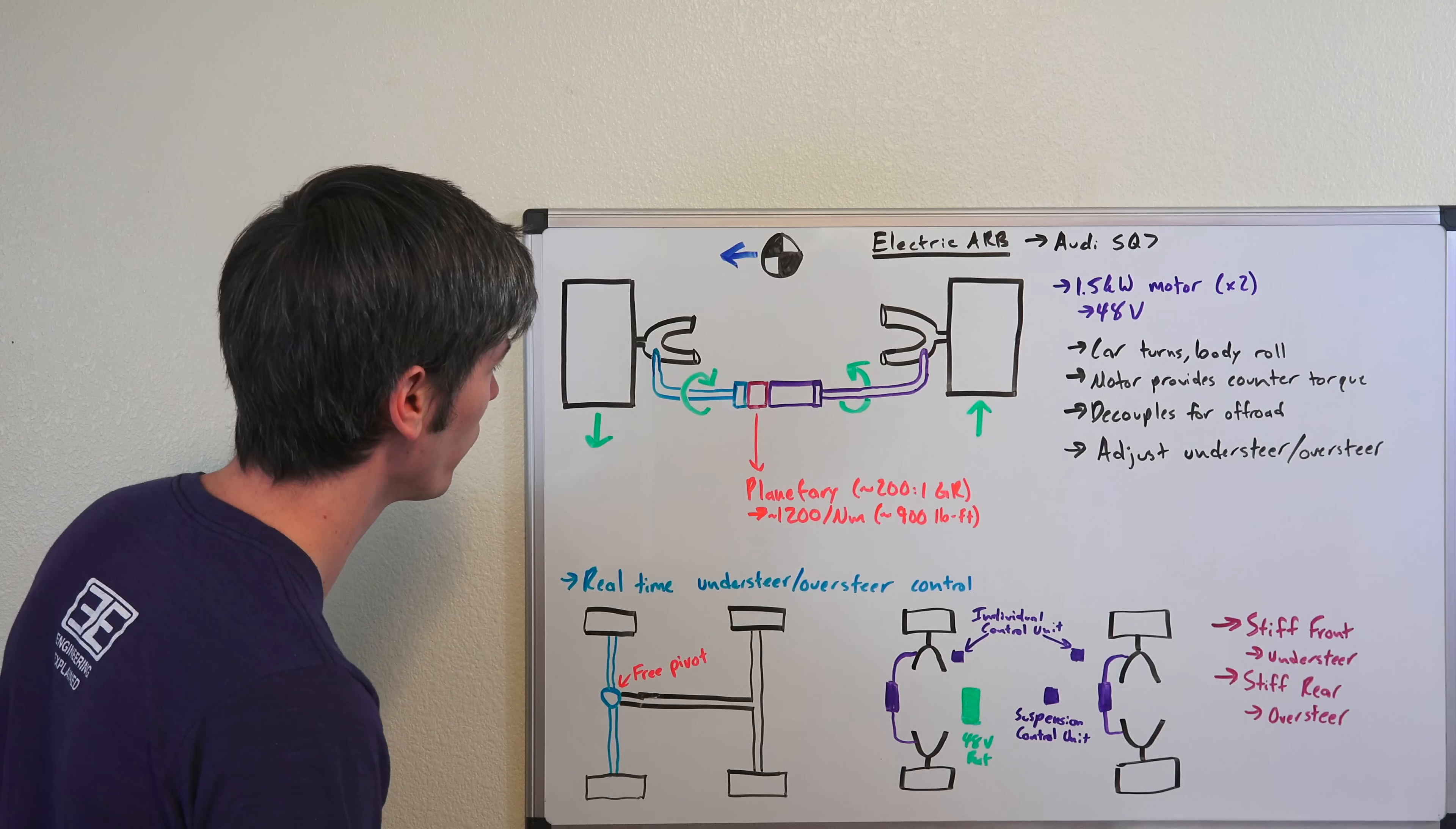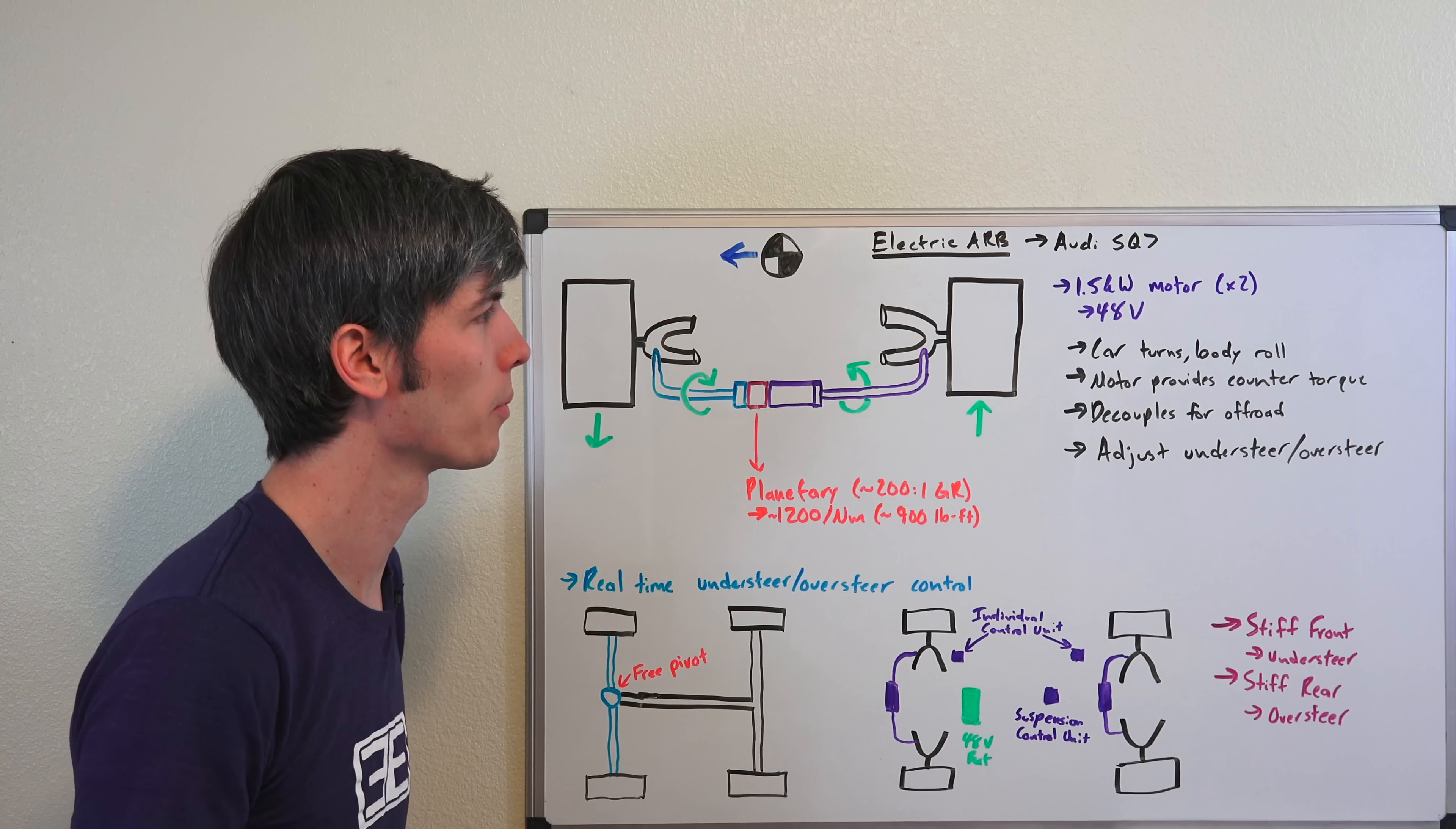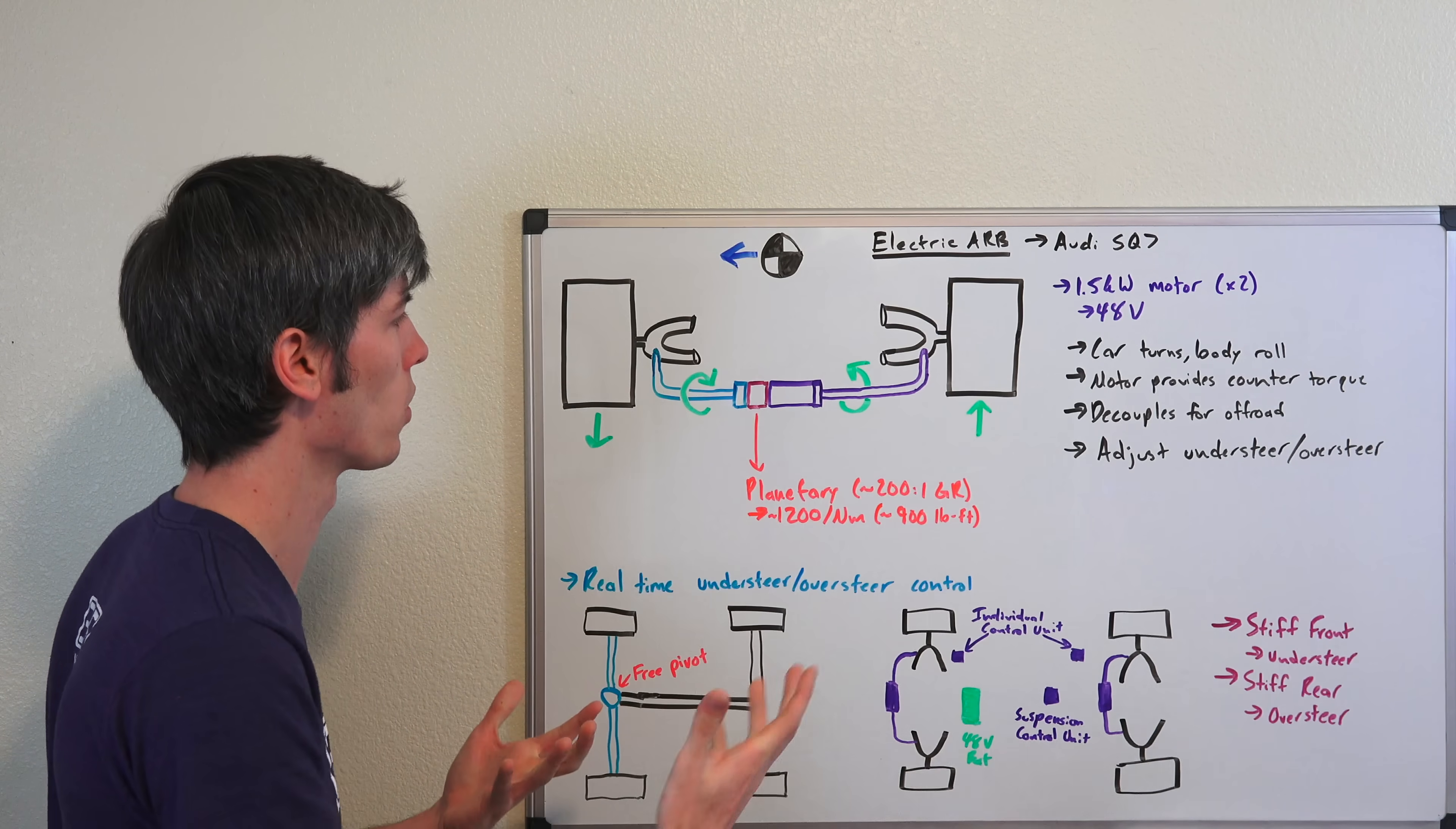There are other companies which have done electronic sway bars. This isn't actually all that innovative, but what's different about the Audi system is they're now incorporating it into a 48-volt system, so it's more powerful. It means you've got more range of control, which is pretty cool.